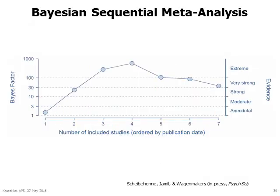Another form of sequential meta-analysis was illustrated by Shaibahena, Jamil, and Wagenmakers, who focused on Bayesian hypothesis testing instead of estimation. They used a fixed effects model, but the point here is that the Bayes factor can be updated as each successive trial is completed. This graph simply shows the value of the Bayes factor as data accumulate across studies.